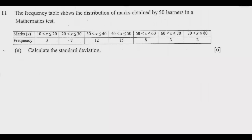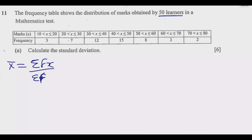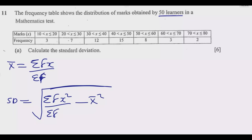Let me focus on question A first. To find the standard deviation, you need to know two things: the mean, and then after finding the mean you can proceed to finding the standard deviation. The mean formula is: mean = Σ(f × x) ÷ Σf. Since we are told there are 50 learners, Σf = 50. Then the standard deviation formula is: SD = √(Σ(f × x²) ÷ Σf − mean²).